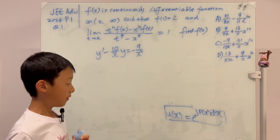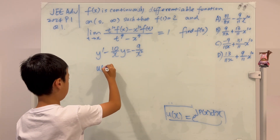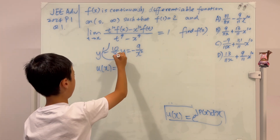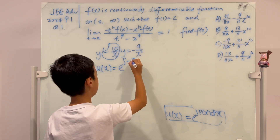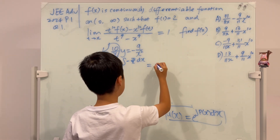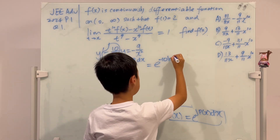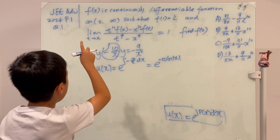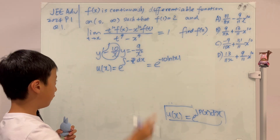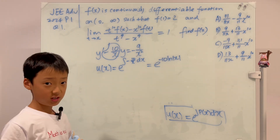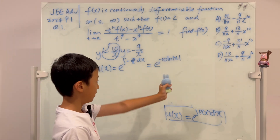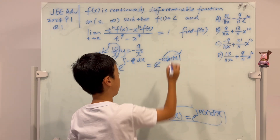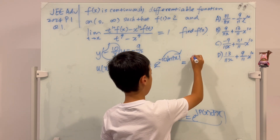For our specific problem, u(x) = e^(∫−10/x dx) = e^(−10 ln x). Since x > 0 on (0, ∞), we don't need the absolute value, and the e and ln cancel. So the integrating factor is 1/x^10.